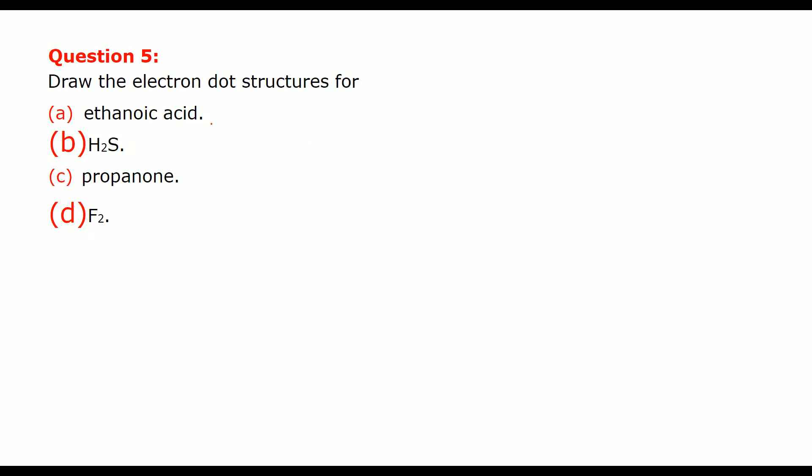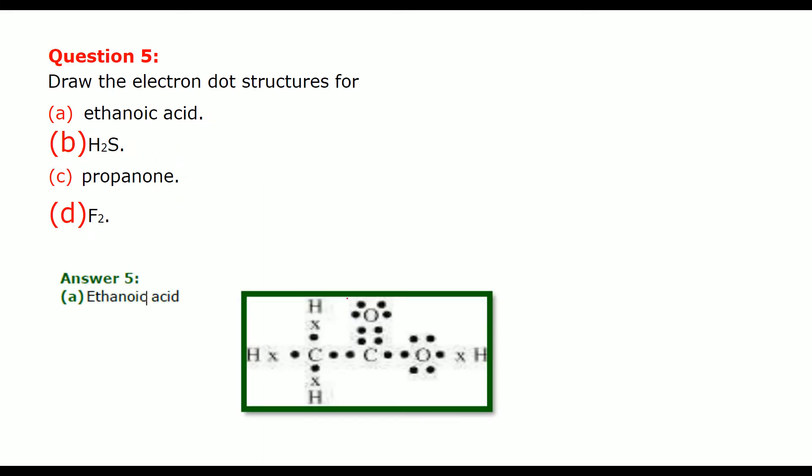Draw the electron dot structures for ethanoic acid, H2S, propanone and F2. So this ethanoic acid is C2H3COOH or C2H4O2. Right? So they are 2C, 2O and 3H. So first we will take this first carbon combined with 3 hydrogen means making covalency or covalent bond with them. Then this carbon making with one with carbon, other with oxygen, other with another oxygen and one oxygen combining with hydrogen.